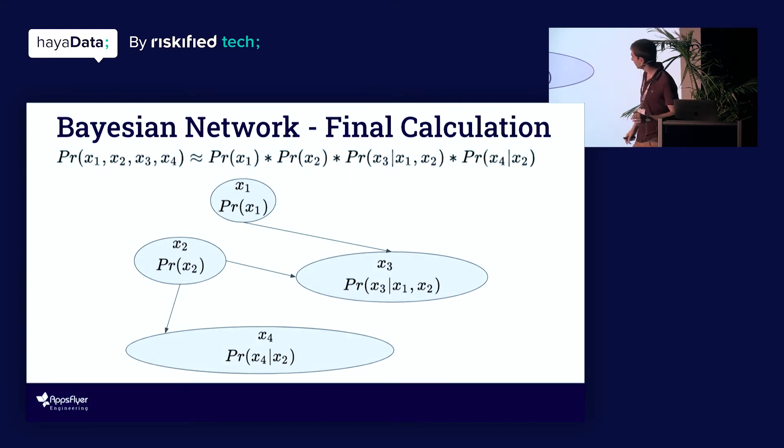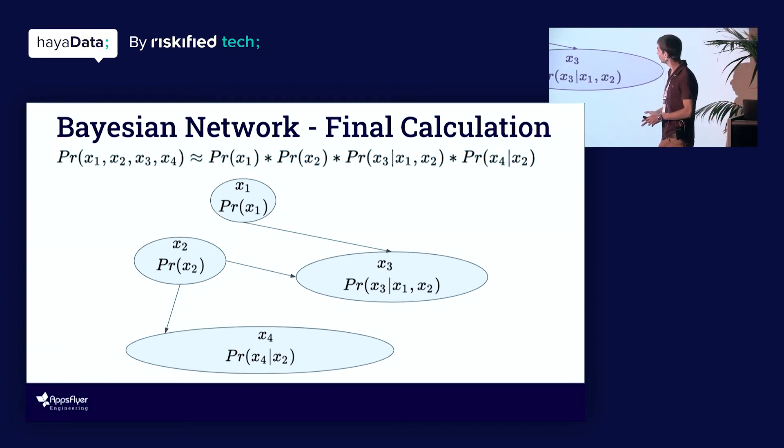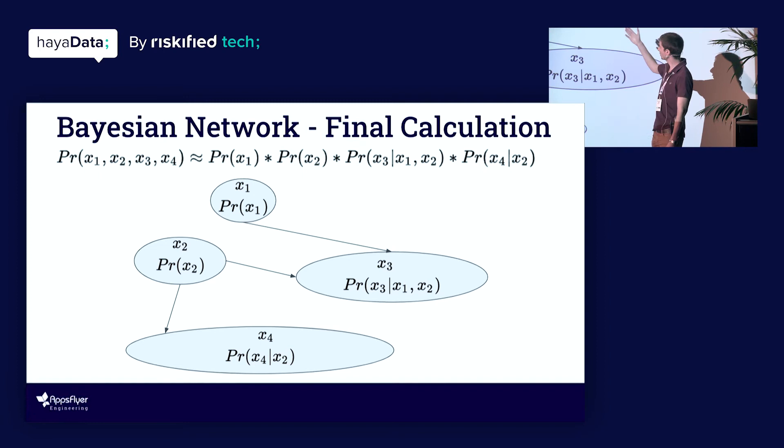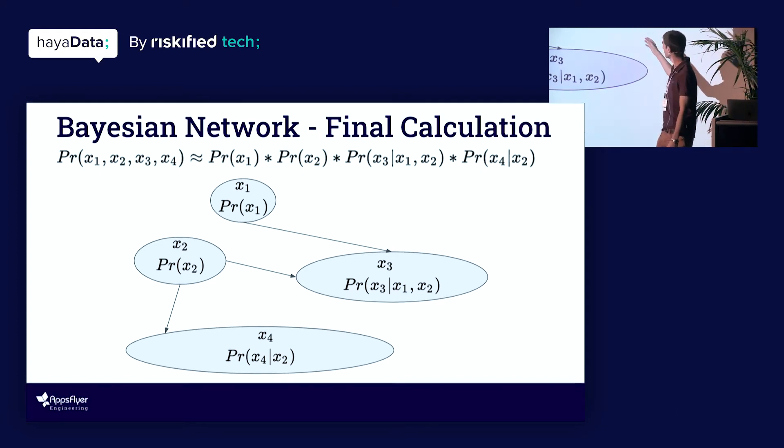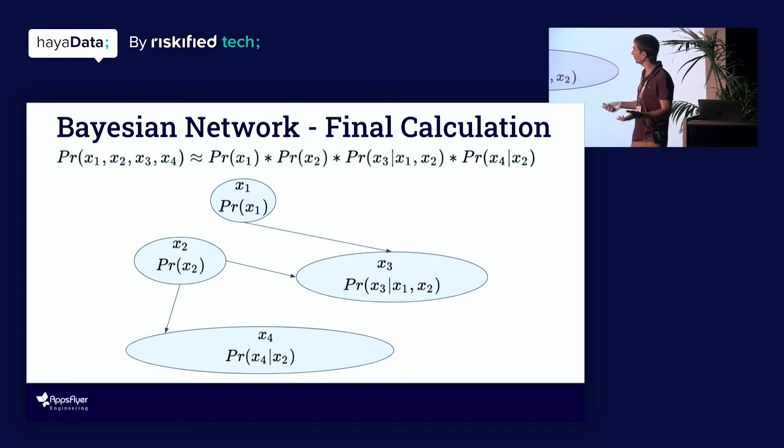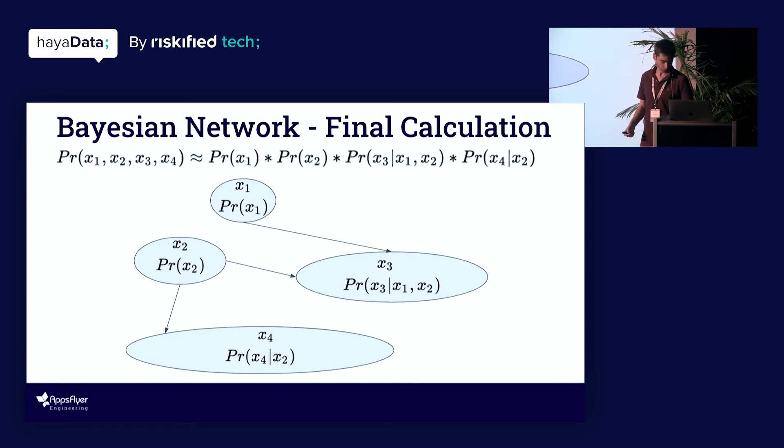So this is our final Bayesian network. Say that all these dependencies are real dependencies. So we only have these edges left. And now our calculation, as stems from this new Bayesian network that we've created, is, as the formula above says, probability for seeing x1, x2, x3, and x4 combined is the probability for seeing x1 times the probability for seeing x2 times the probability for seeing x3 given x1, x2, times the probability for seeing x4 given x2. So now we are able to calculate the probability for seeing this combination with an accurate, a relatively accurate calculation and yet a rather quick or rather practical computation that we can actually make in practice.